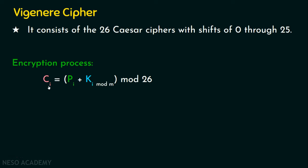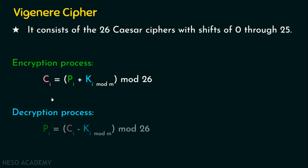We know decryption is the reverse of encryption. Addition is performed in encryption, and subtraction is performed in decryption. So: ciphertext minus the key, mod 26, gives the plaintext back. Let's see an example now.